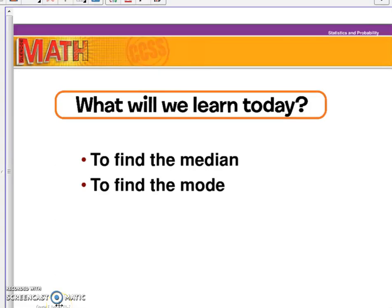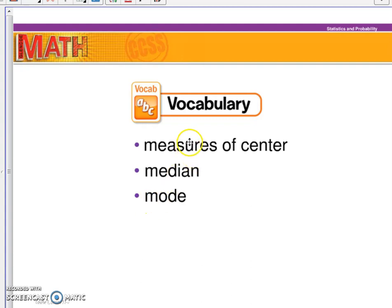Today's lesson is on finding the median and the mode. Measures of center are ways to measure the most common pieces of data or to make a prediction of what the next piece of data would look like. The measure of center we learned yesterday was mean. Today we're doing median and mode.